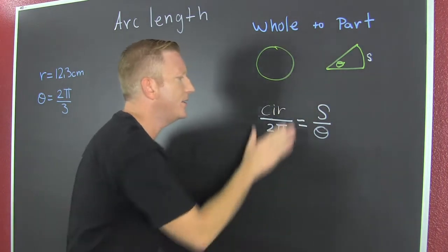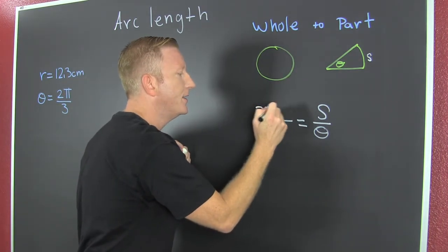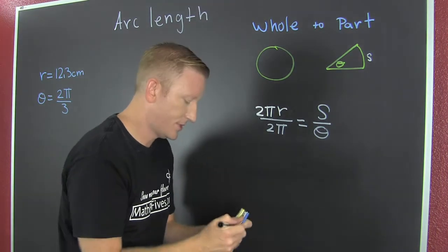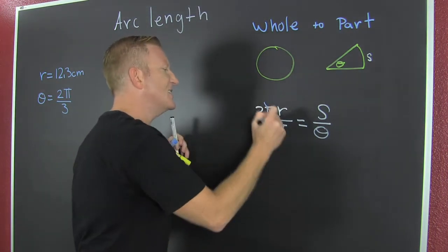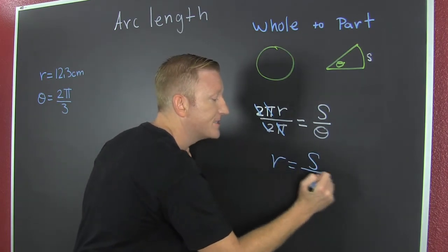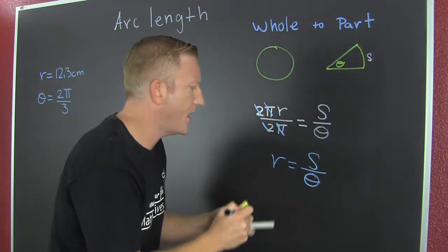And here we go. So the circumference is 2 pi R. Last I checked. And then what happens? We can reduce. R. R is equal to S over theta. Then what? Let's isolate S. Yes.